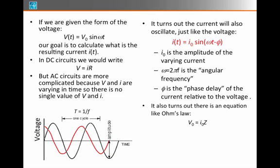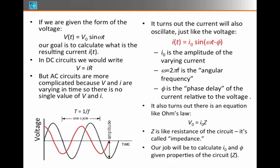It turns out there is an expression we can write down, and that's between the amplitudes. The amplitude of the voltage swing is related to the amplitude of the current swing, and it's related to another constant proportionality that's like resistance, but it's called impedance. So this is the generalization to AC circuits of resistance, and it goes by the letter Z. Our job will be to calculate I₀ and φ given properties of the circuit, the impedance Z.